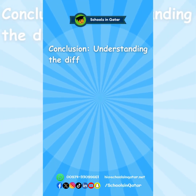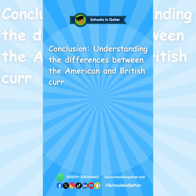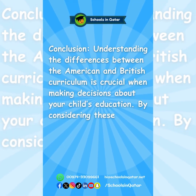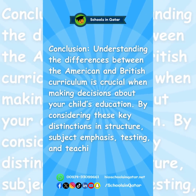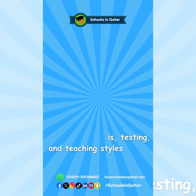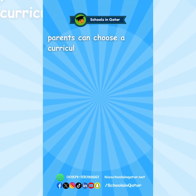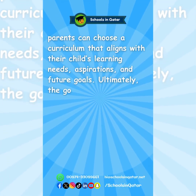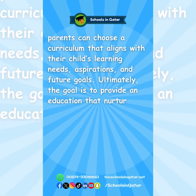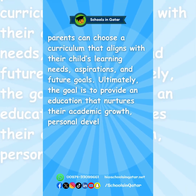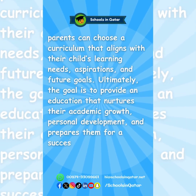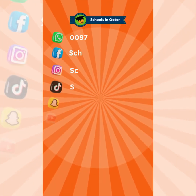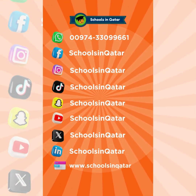Conclusion. Understanding the differences between the American and British curriculum is crucial when making decisions about your child's education. By considering these key distinctions in structure, subject emphasis, testing, and teaching styles, parents can choose a curriculum that aligns with their child's learning needs, aspirations, and future goals. Ultimately, the goal is to provide an education that nurtures their academic growth, personal development, and prepares them for a successful future, regardless of the chosen curriculum.